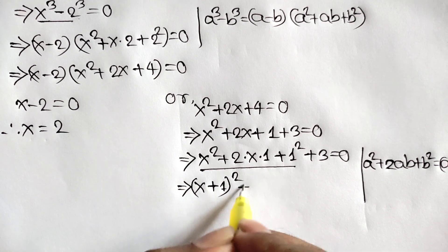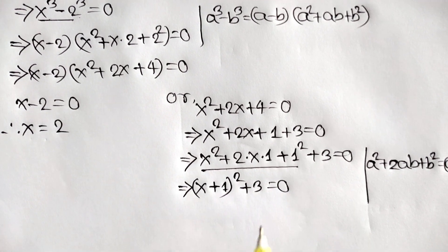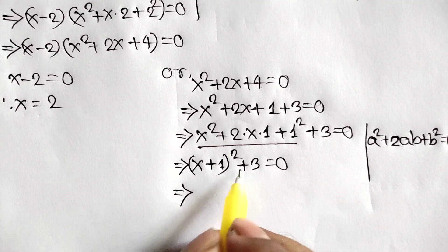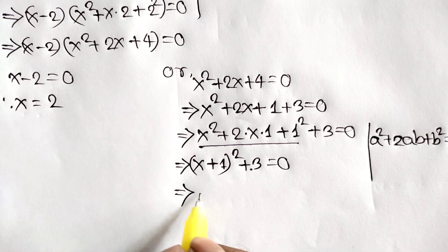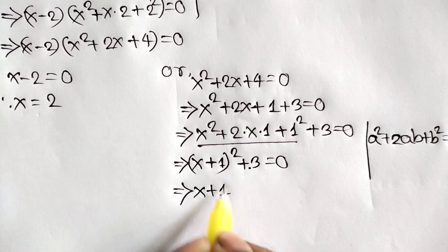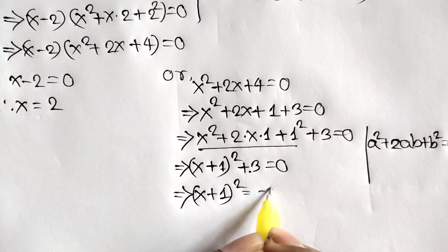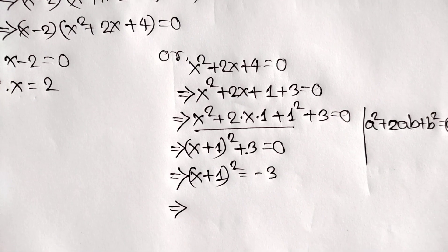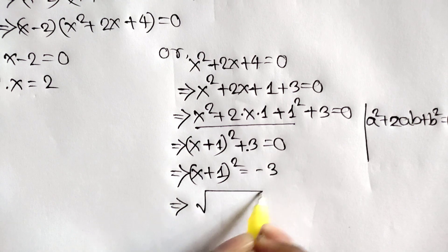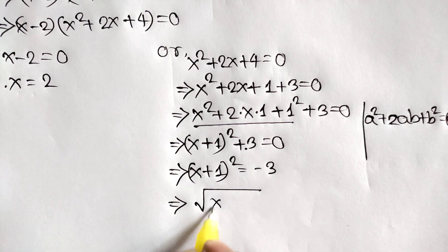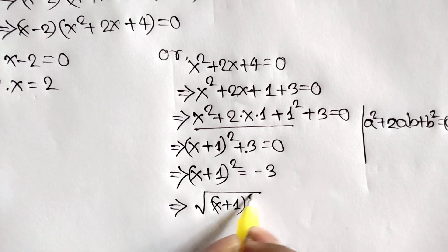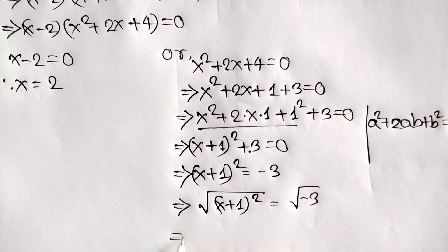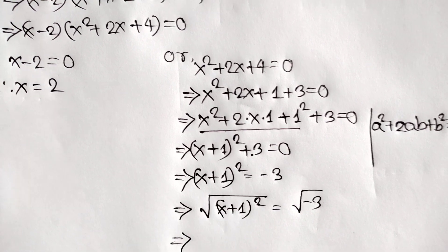So we can write x plus 1 whole square plus 3 is equal to 0. Taking this 3 to the right side we can write x plus 1 whole square is equal to negative 3. Taking square root of both sides we can write the square root of x plus 1 whole square is equal to the square root of negative 3.